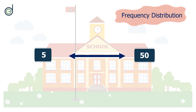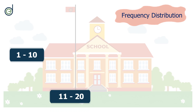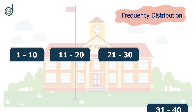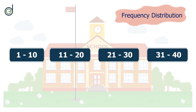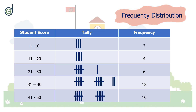Before grouping the data, she considers the range first, which is 5 to 50 — these are the lowest and highest scores. With this range, the data can be grouped into class intervals such as 1 to 10, 11 to 20, 21 to 30, 31 to 40, and 41 to 50. We now get a table — this is called a grouped frequency distribution table.